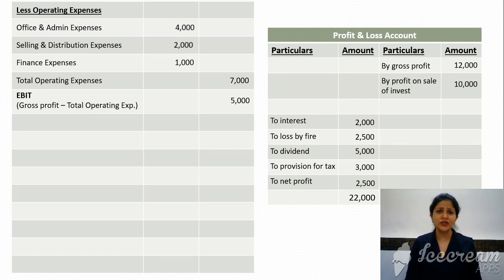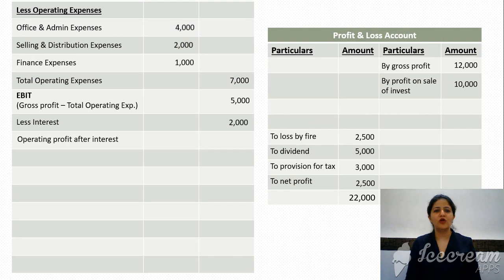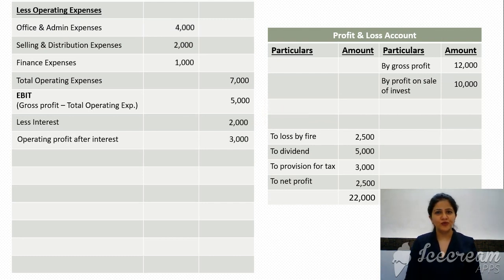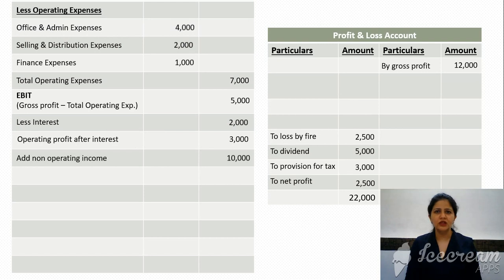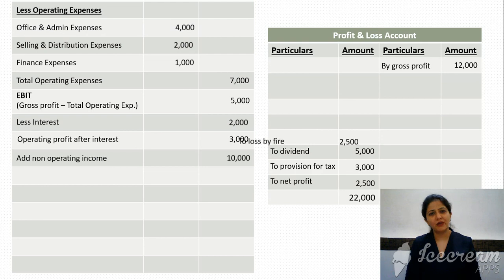From EBIT, we reduce interest to get operating profit after interest — in this example, that is 3,000. Next, we make adjustments for non-operating items — those not part of routine business and non-recurring in nature. We add non-operating income, such as profit on sale of investments or fixed assets, and deduct non-operating expenses, such as loss by fire or loss on sale of fixed assets.